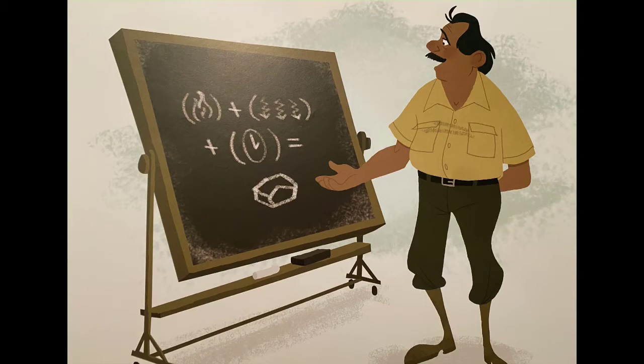Working together, heat, pressure, and time create the three types of rocks that exist in the world. Every rock in the world can be placed into one of three categories: igneous, sedimentary, and metamorphic. Try saying each of these rock types out loud: igneous, sedimentary, metamorphic. These are the three types of rocks.